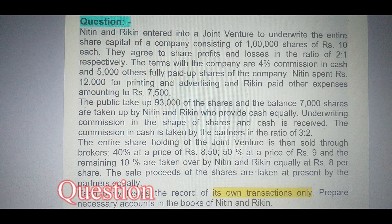Let's start through a question. Nitin and Rikin entered into a joint venture to underwrite the entire share capital of the company, consisting of 1 lakh shares of Rs 10 each. They agree to share profits and losses in the ratio of 2:1 respectively. The terms with the company are 4% commission in cash and 5,000 fully paid-up shares of the company. Nitin spent Rs 12,000 for printing and advertising.